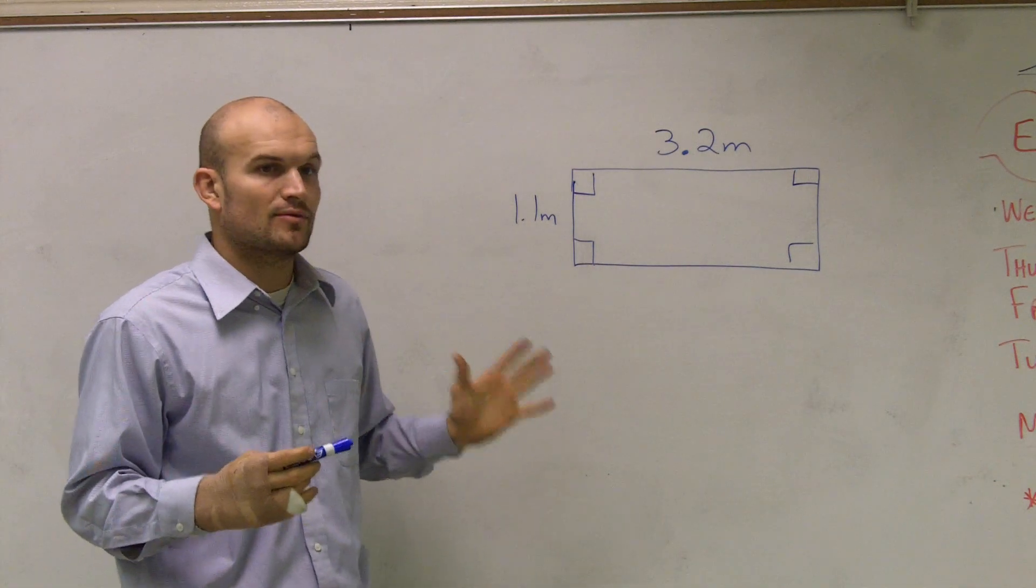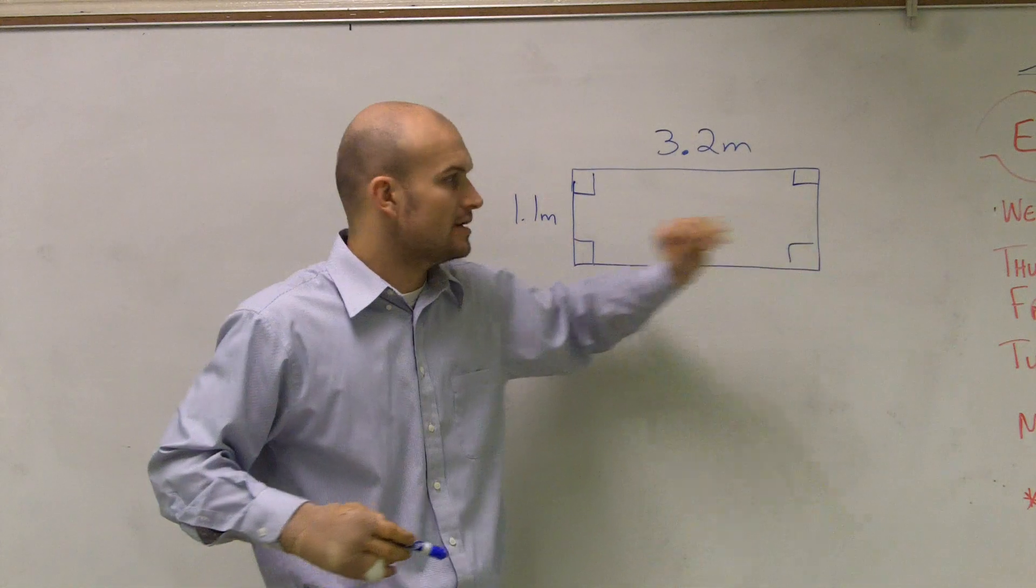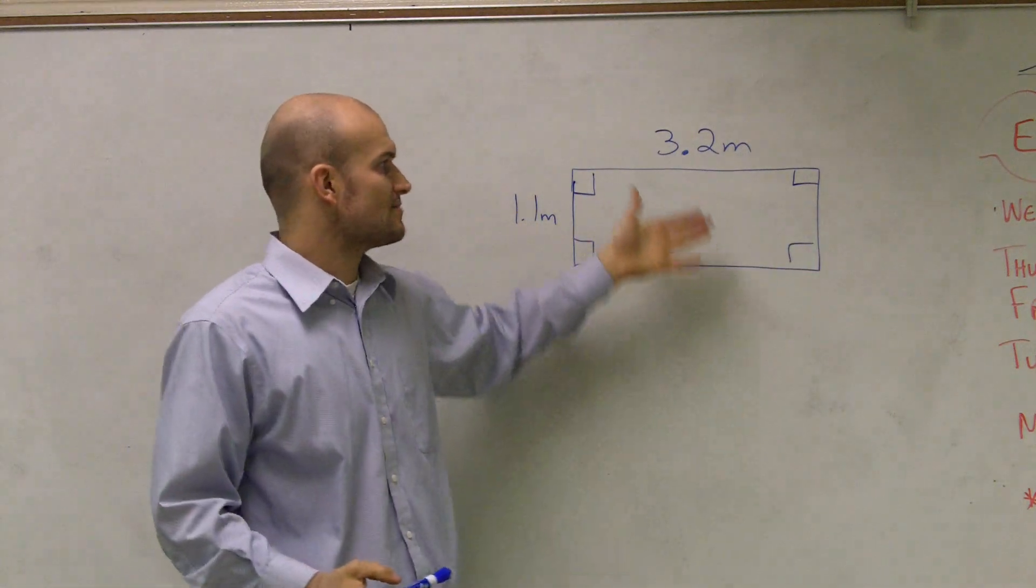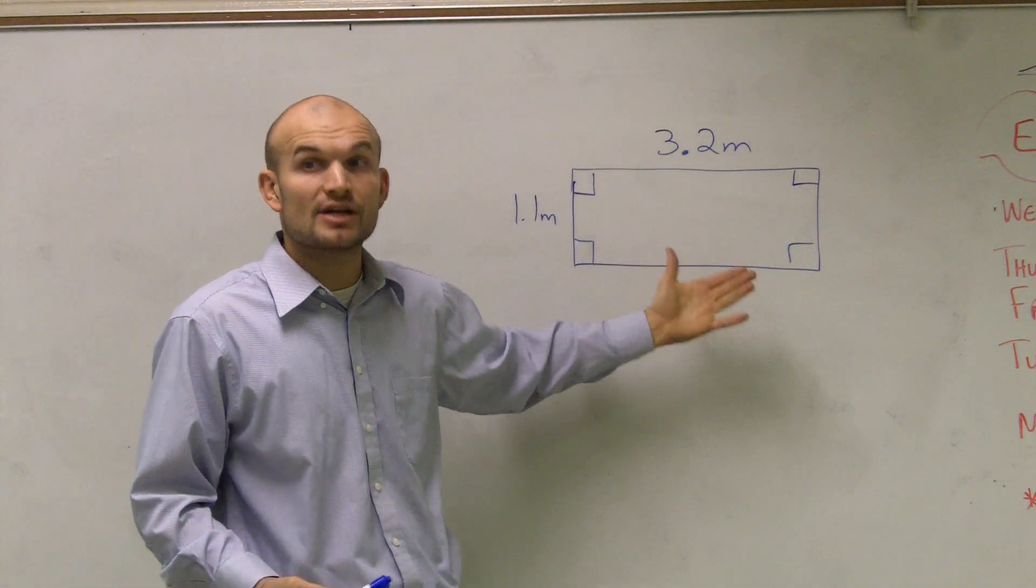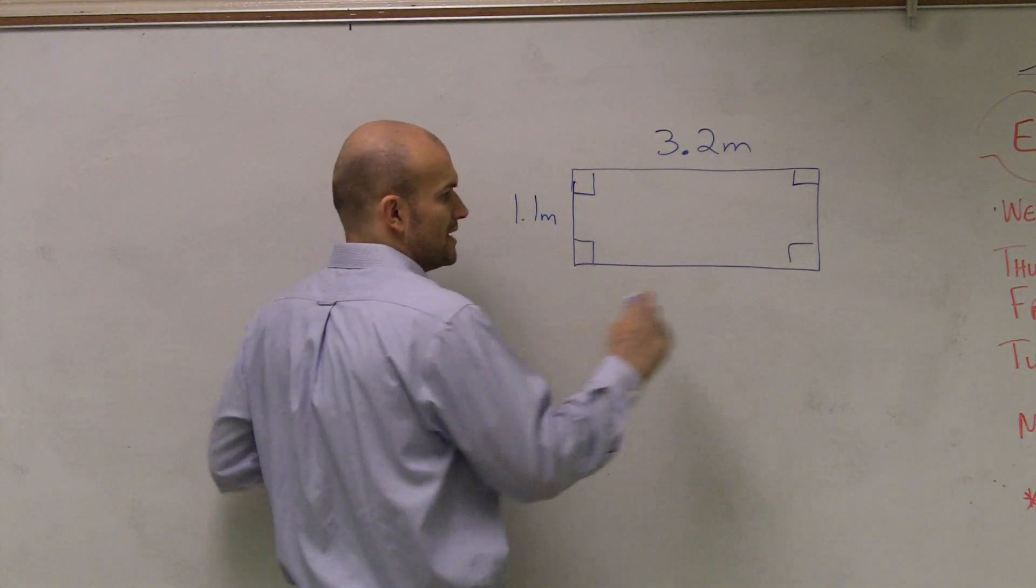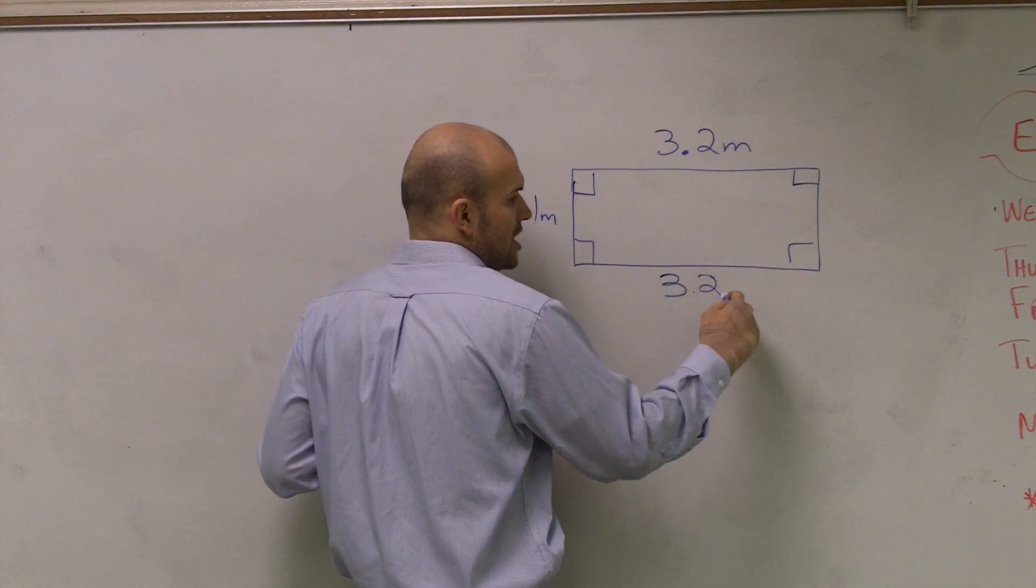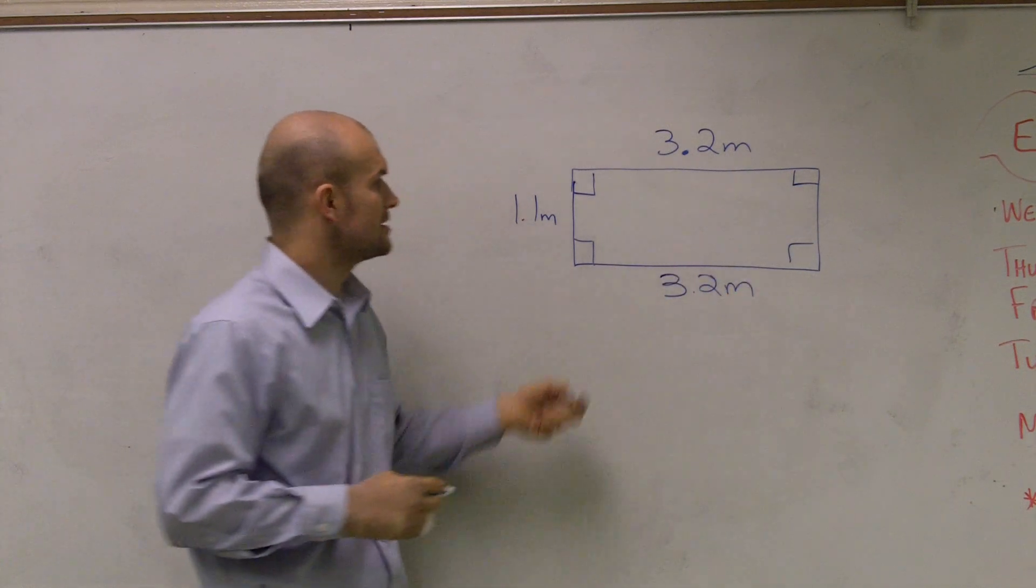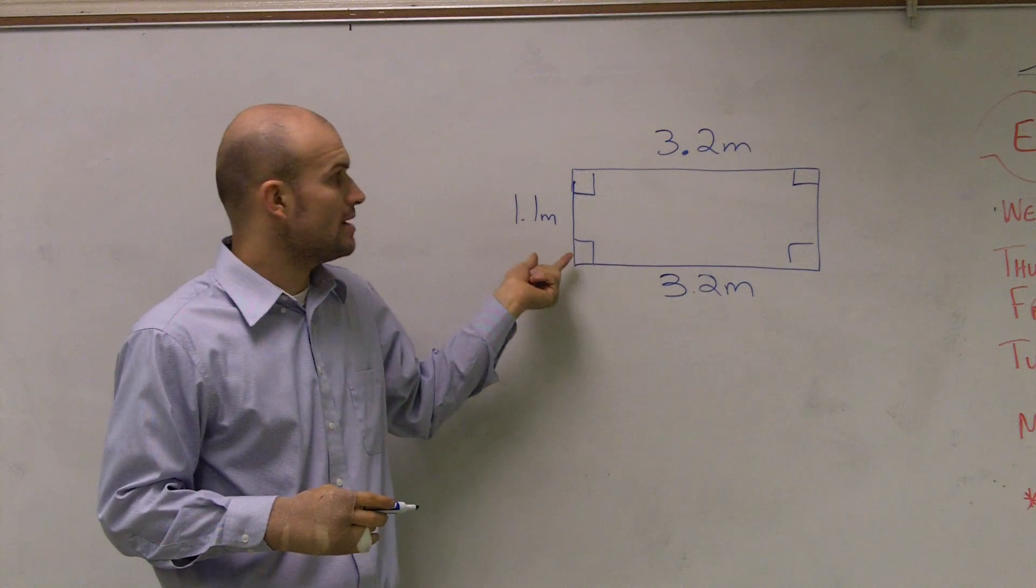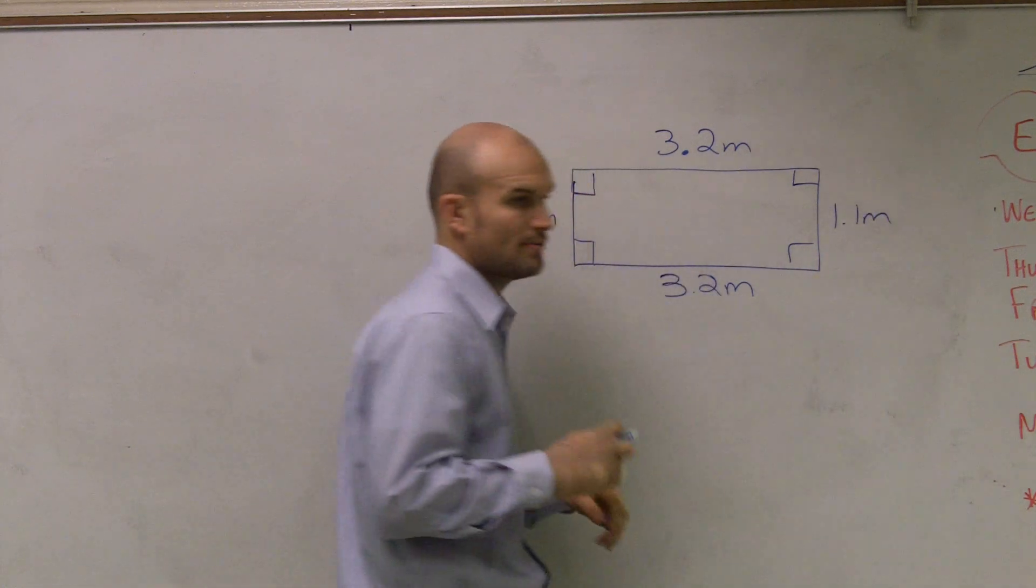To find the perimeter, what we're asking for is the total distance around the figure. And one thing to notice about rectangles is rectangles have opposite sides that are the exact same length. So therefore, if this side length is 3.2 meters, this is also going to be 3.2 meters. If this length is 1.1 meters, this length over here is also going to be 1.1 meters.